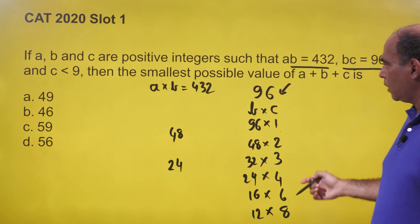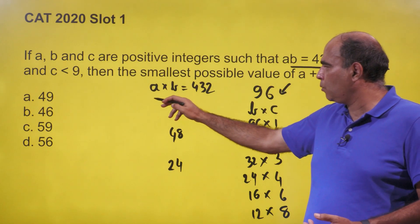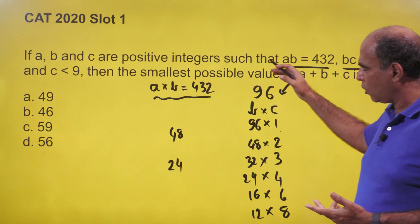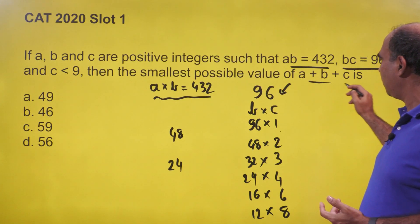Now the other trigger is that a × b = 432. So if we take b from the factor pairs, we need to check if we get a positive integer value for a. The objective is to minimize a + b + c.